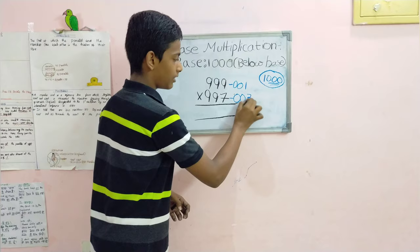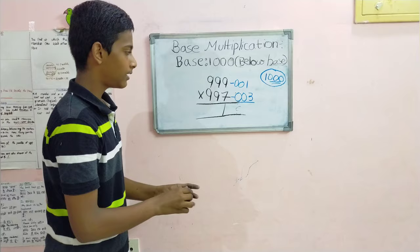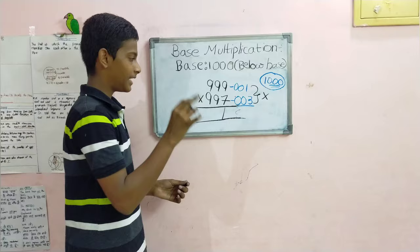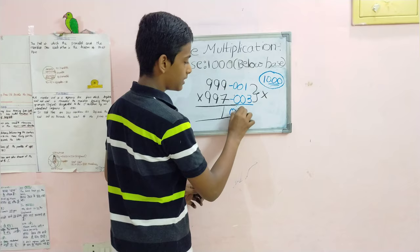For obtaining the right part of the answer, we have to multiply these two differences, which gives us 3. And not just 3 — it is 003, as there are three zeros in thousand.